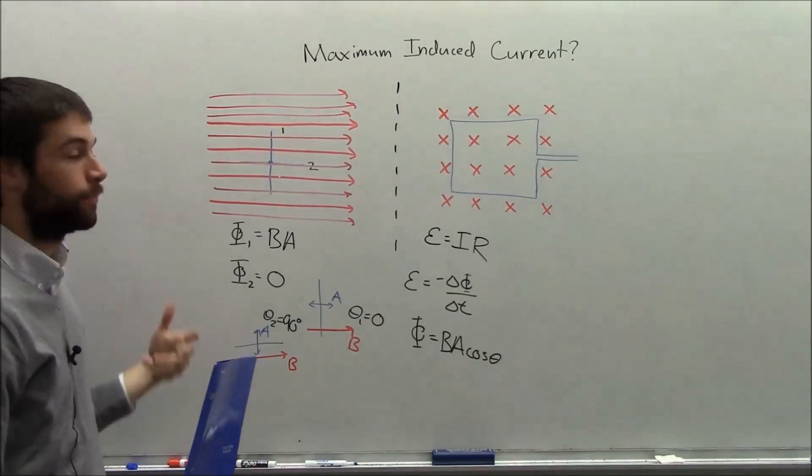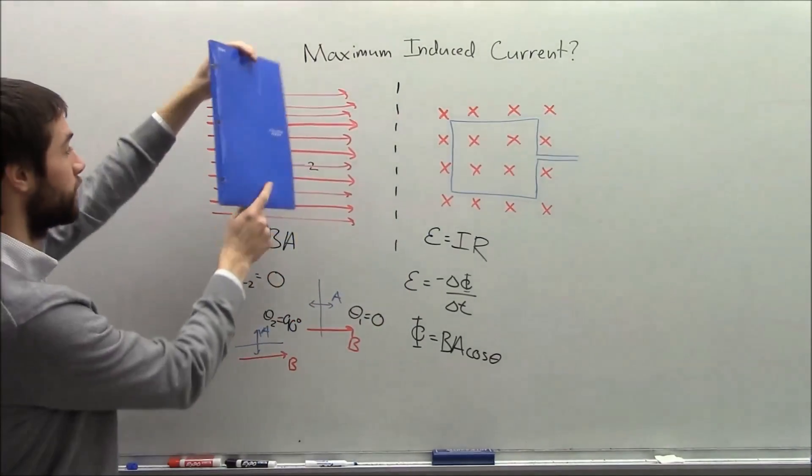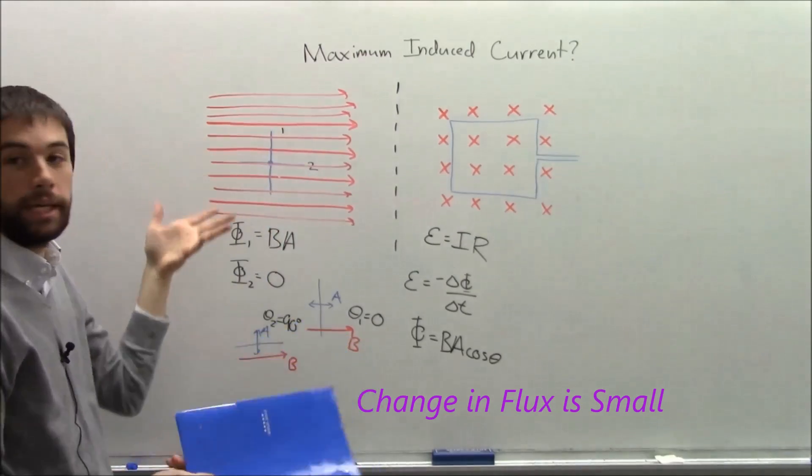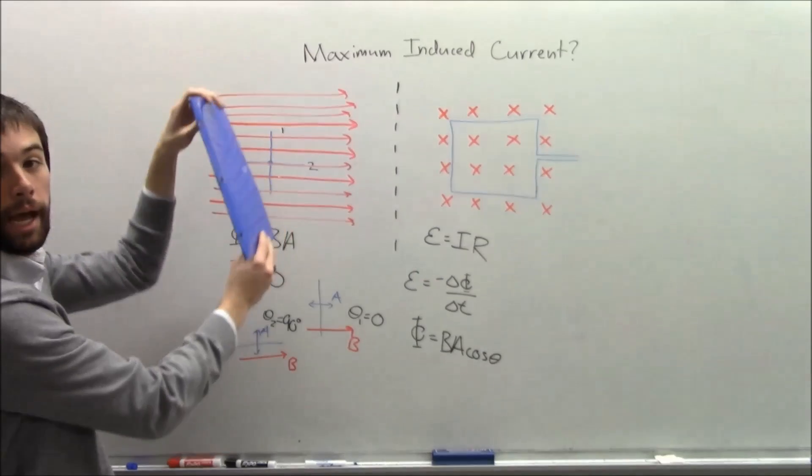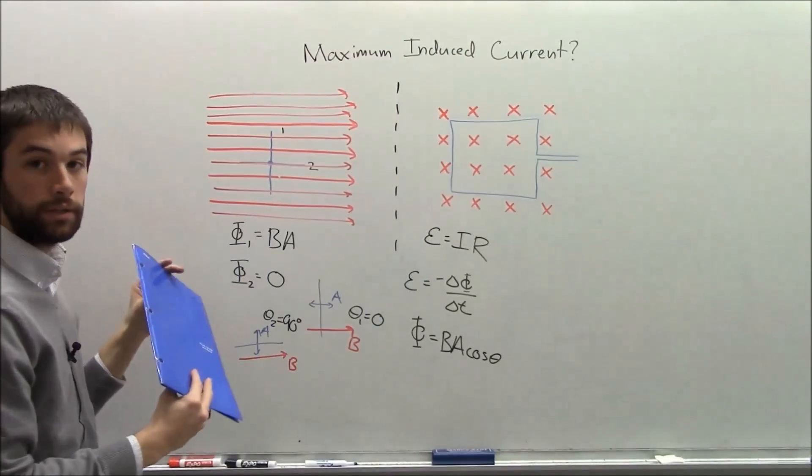So what that tells me is that the flux isn't changing very much. Remember, flux is how many arrows poke through my loop. So if I rotate it somehow and the number of arrows doesn't change, then the flux doesn't change.